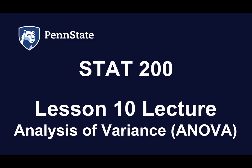In this course, we'll just be covering one-way ANOVAs. We call them one-way because they have just one explanatory variable. There are higher-order ANOVAs that you'll see if you take an intermediate statistics course.